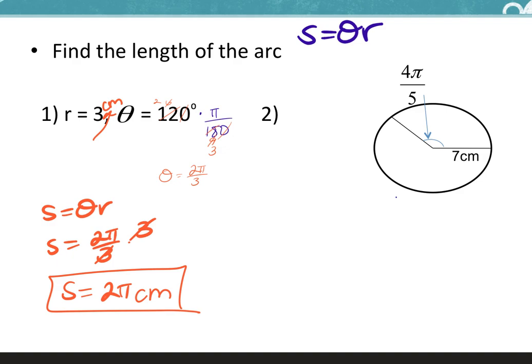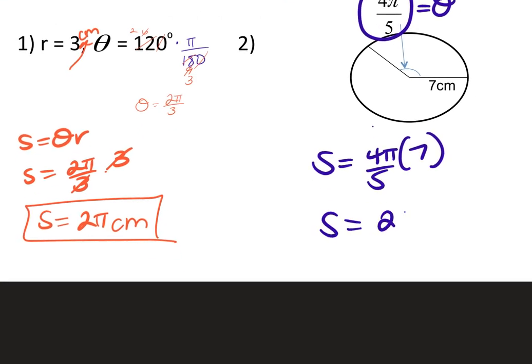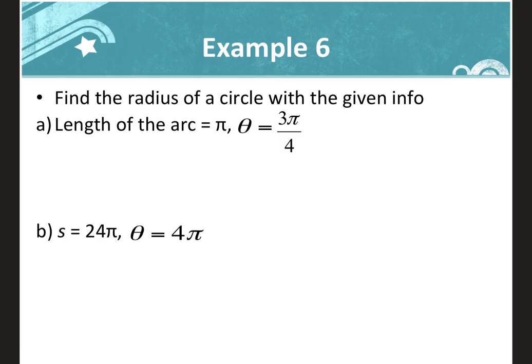For example two, the angle is already given in radians, so use S equals theta times r directly. Multiplying gives S equals 28 pi over 5 centimeters. Keep the answer exact — don't convert to a decimal unless the problem asks you to round to the nearest something, in which case use the pi button on the calculator.